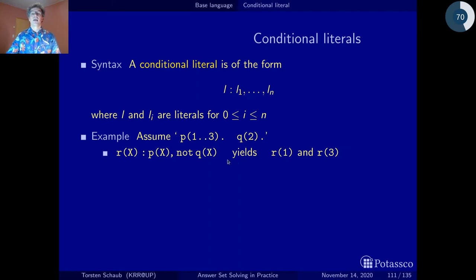So assume we have p(1), p(2) and p(3) and we have q(2). So you can think of this as a set p which contains 1, 2, 3 and the set q which contains 2.